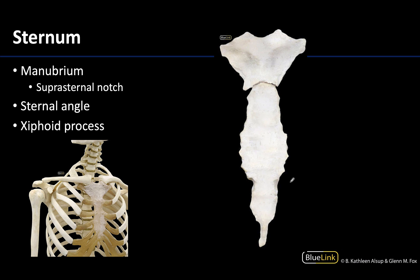Moving to the sternum — the sternum is often colloquially referred to as the breastbone. If you put your finger right at the top of your sternum, you'd be feeling this region called the suprasternal notch, that palpable divot, which is part of the manubrium or the handle of the sternum. The sternum is divided into three different parts: the manubrium, the body, and then the xiphoid process, which is the inferior-most portion and by far the most variable portion. You can also see the clavicles, which do articulate with the top portion of the manubrium, and there are a lot of rib articulations going on as well.